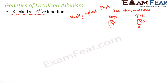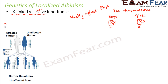Now let us look at three different cases of how localized albinism gets inherited. In case number one, we have an affected father and an unaffected mother. The father has X-A, Y — where X-A represents an albino gene on the X chromosome, a gene which causes albinism. The mother is unaffected and is not a carrier, so the mother is XX.